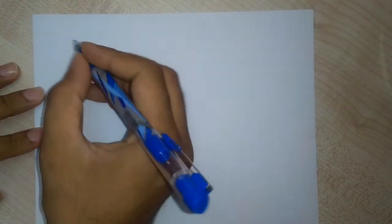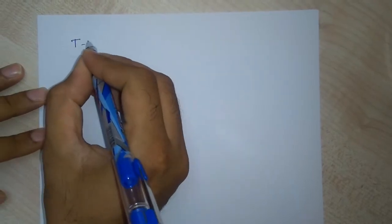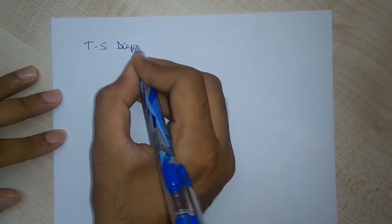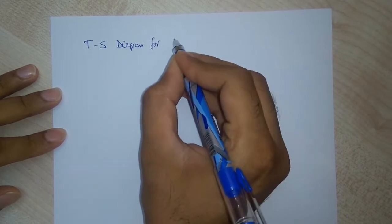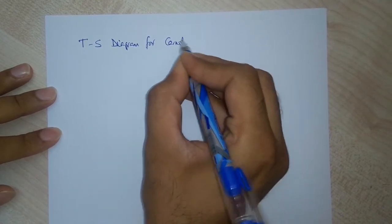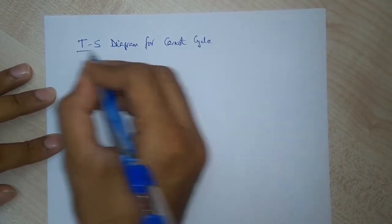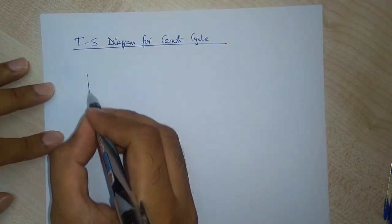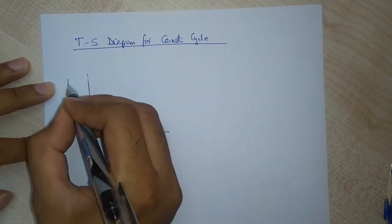Hello students, this is our last lecture of heat and thermodynamics. Today we'll learn about the TS diagram for the Carnot engine — that is, the temperature and entropy diagram. In previous lectures we already covered the PV diagram for a Carnot cycle.